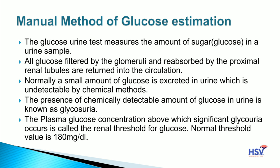Normally, a small amount of glucose is excreted in urine which is undetectable by chemical method. इस process में बहुत small amount of glucose urine के through excrete होता है लेकिन वो chemical method से undetectable होता है। The presence of a chemically detectable amount of glucose in urine is known as glycosuria. अगर urine में ज्यादा glucose आ जाए तो उस condition को glycosuria कहते हैं।